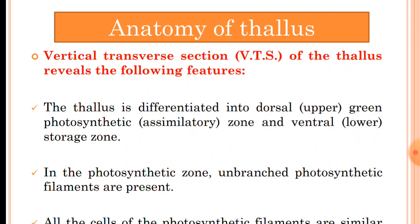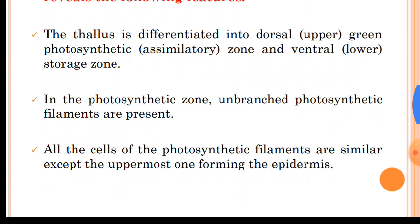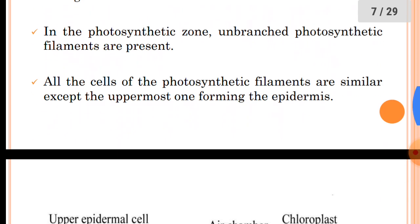Now the internal structure or anatomy of the thallus. The vertical transverse section of the thallus reveals the following features. The thallus is differentiated into a dorsal upper green photosynthetic or assimilatory zone and a ventral or lower storage zone. In the photosynthetic zone, photosynthetic filaments are present. These photosynthetic filaments are unbranched, and in between them air channels or air spaces are present. These air channels open outside by simple pores.